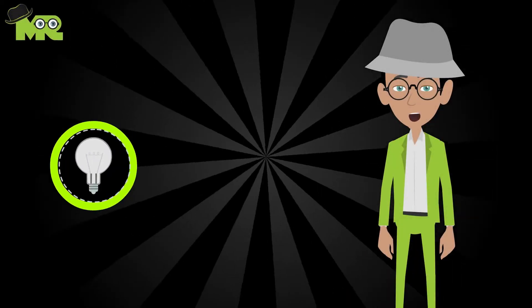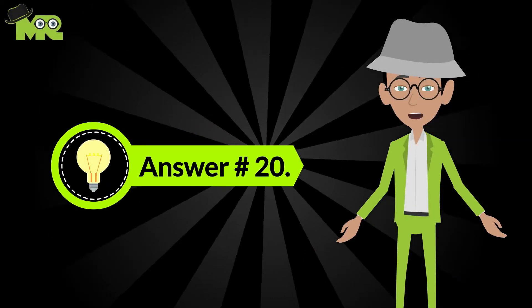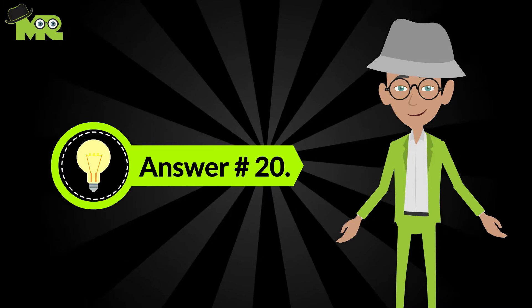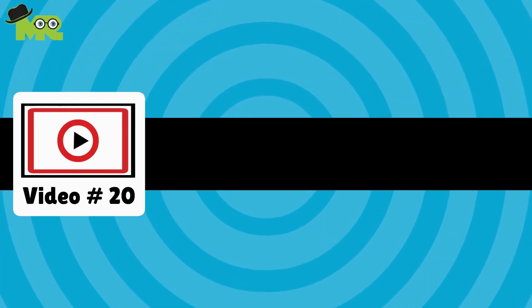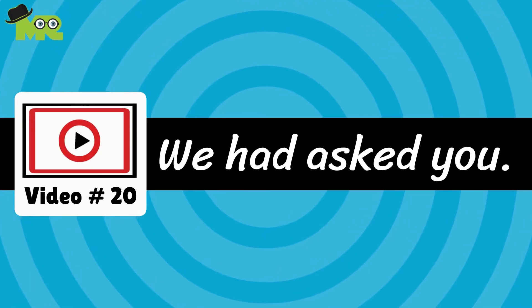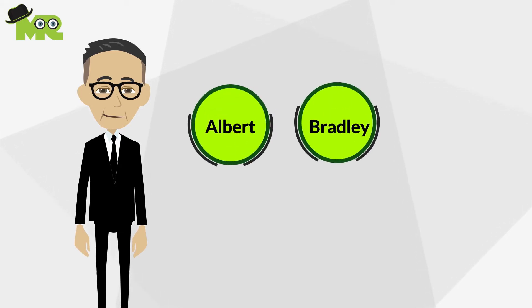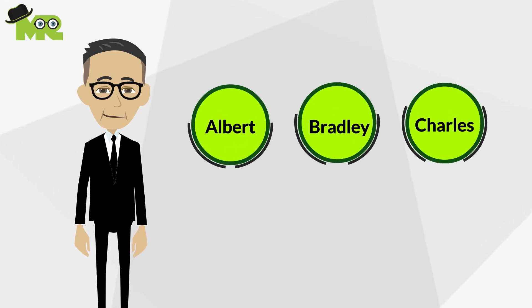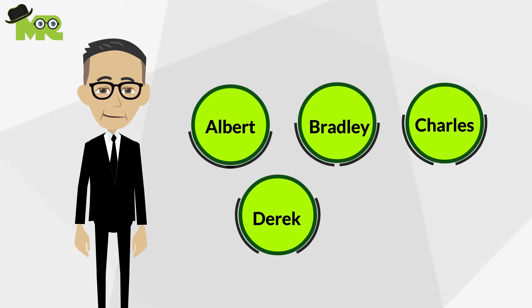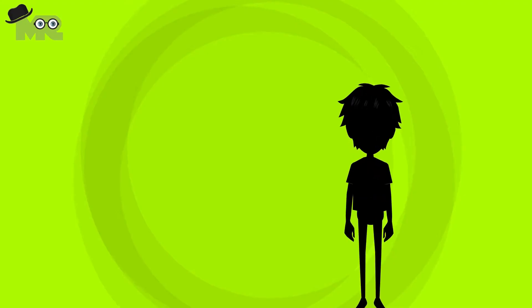Hey friends, it's Mr. Animate with the answer for question number 20. In the last video we asked you: Mr. Smith has five boys — Albert, Bradley, Charles, Derek, and Edwin.